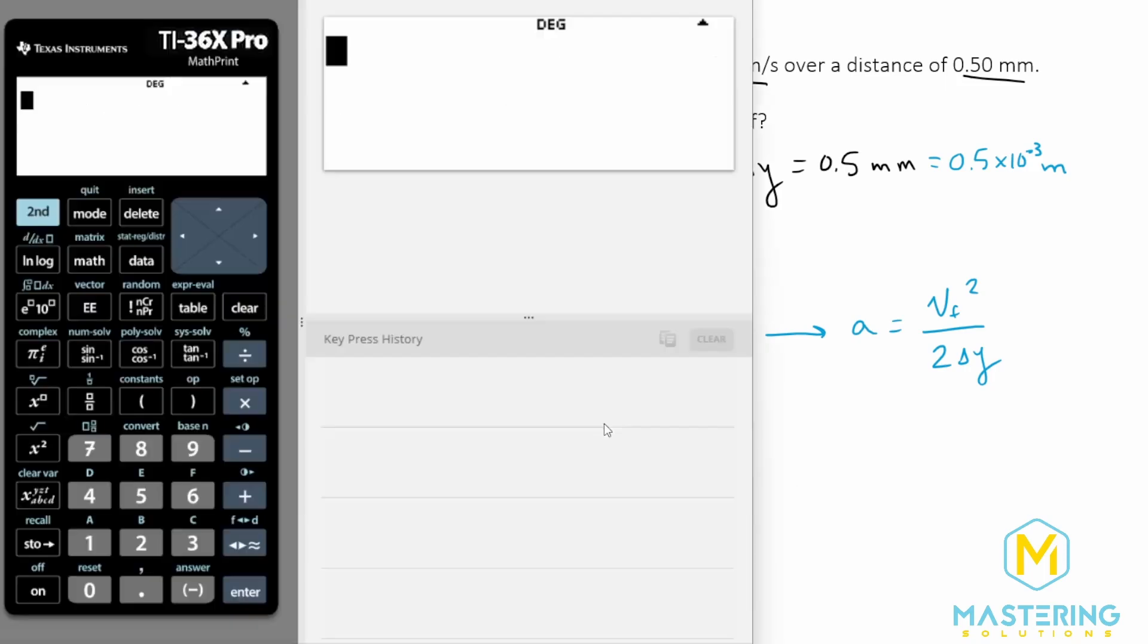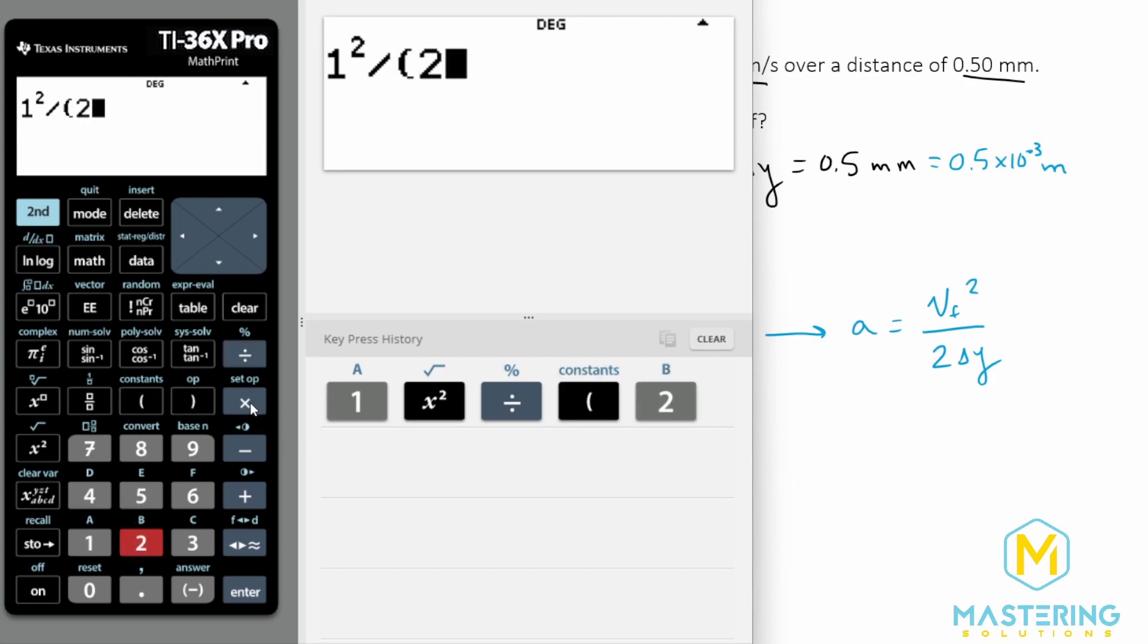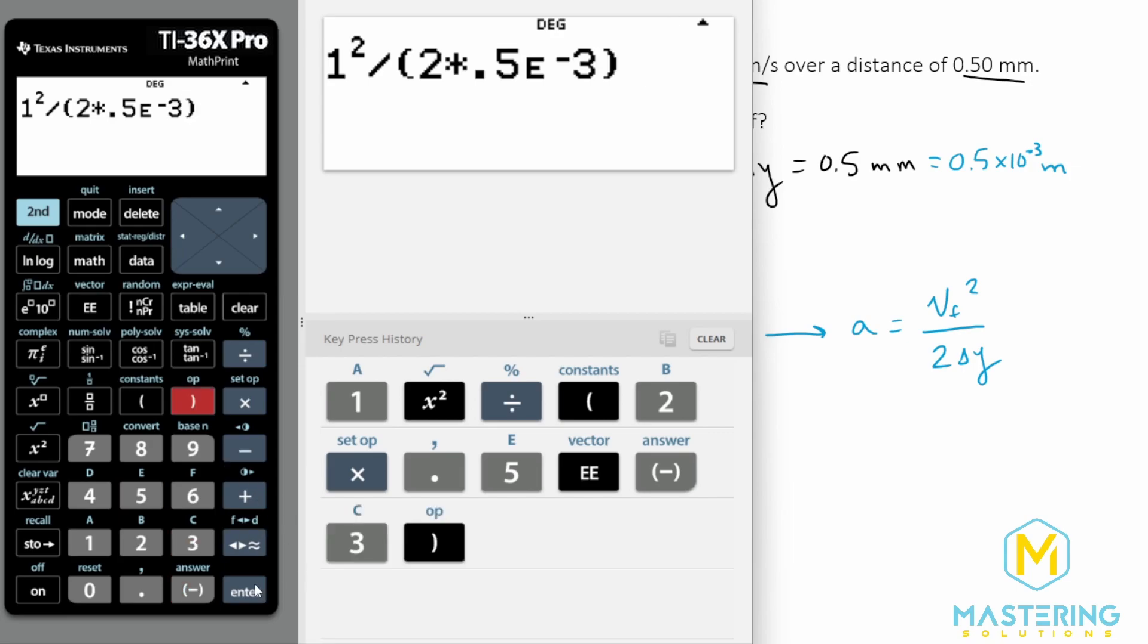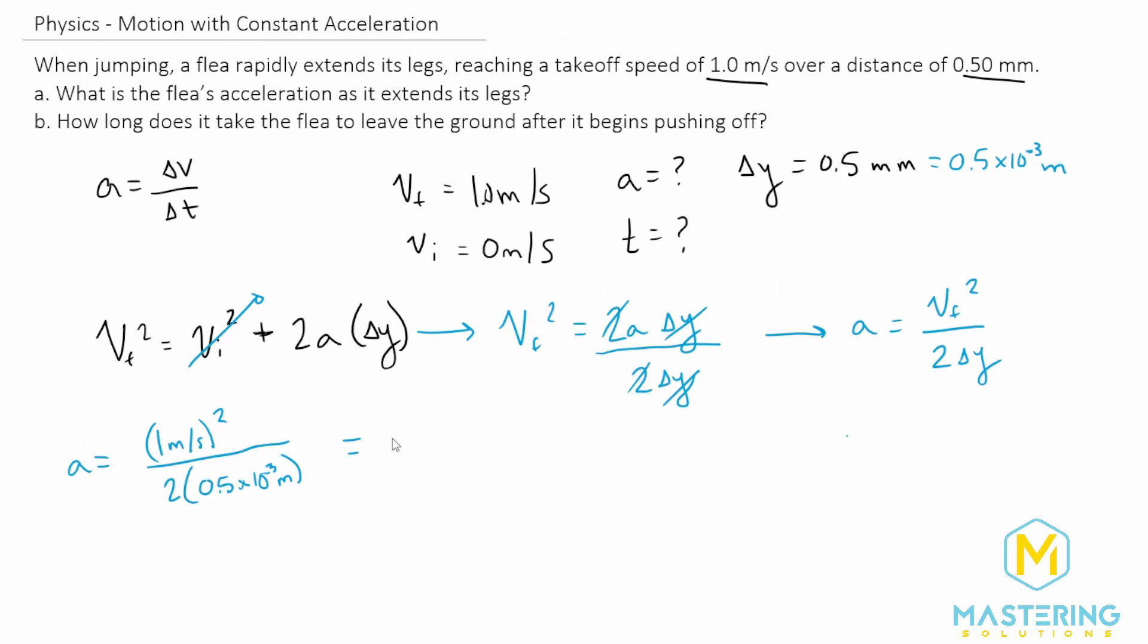And we can plug that into the calculator now. So we have 1 squared divided by 2 times 0.5 times 10 to the negative 3, which gives us 1000. So the acceleration for the flea is 1000 meters per second squared. So that is our answer for part a.